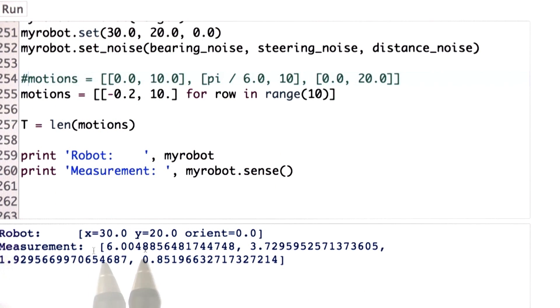The robot is 30, 20. And the bearings to these landmarks would be 6.00, 3.72, 1.92, and 0.85. My question for you is can you implement software that measures those bearings?